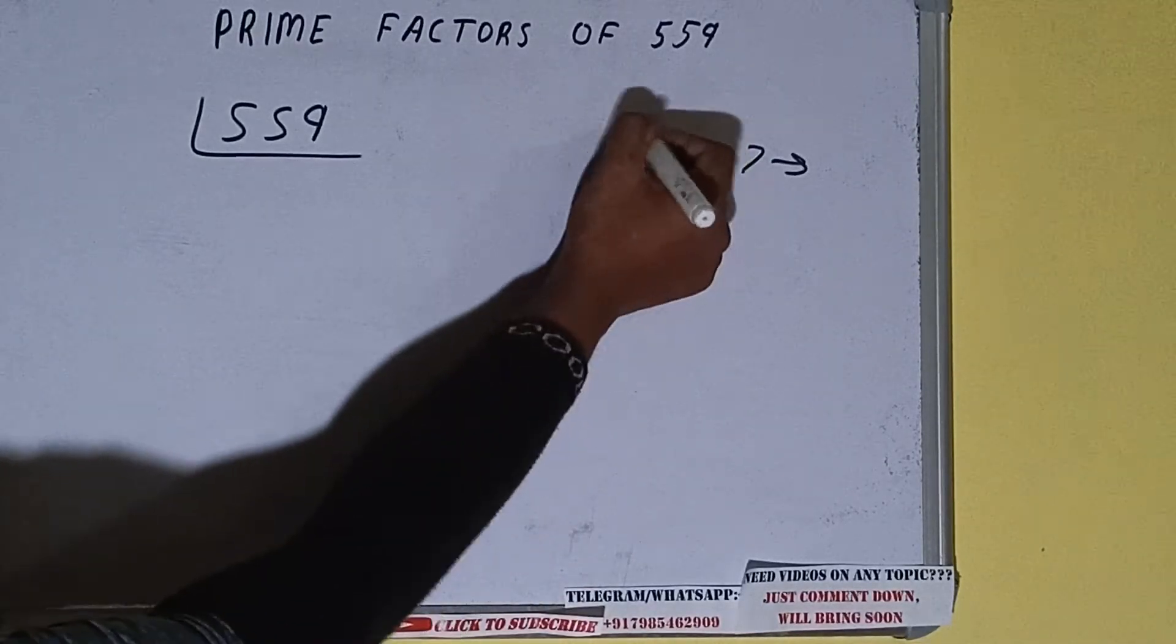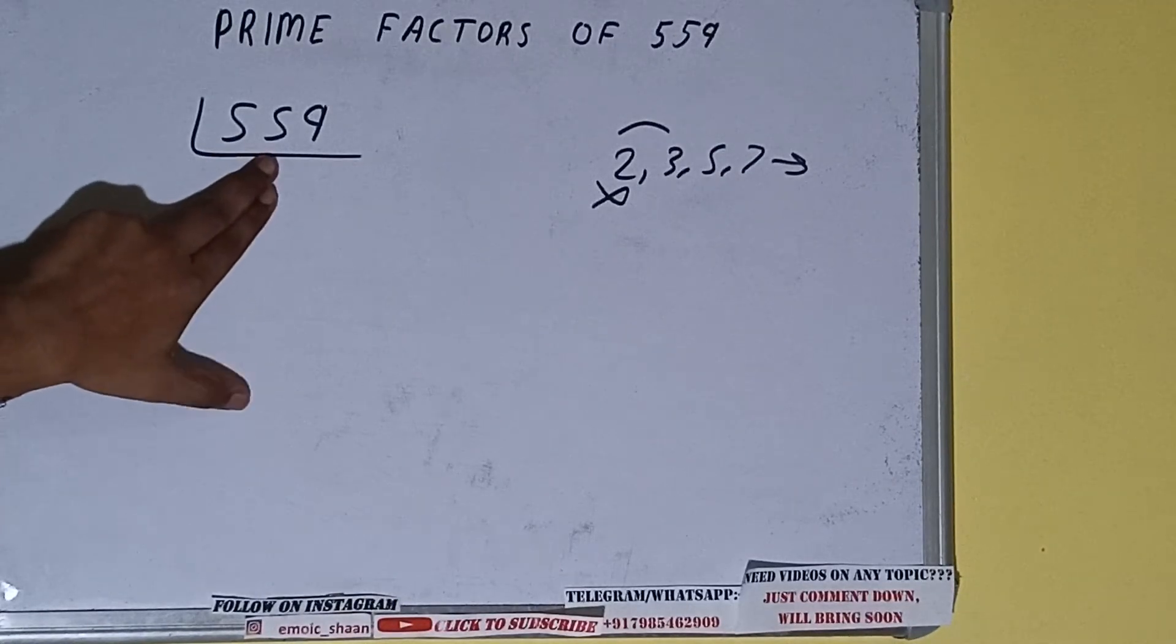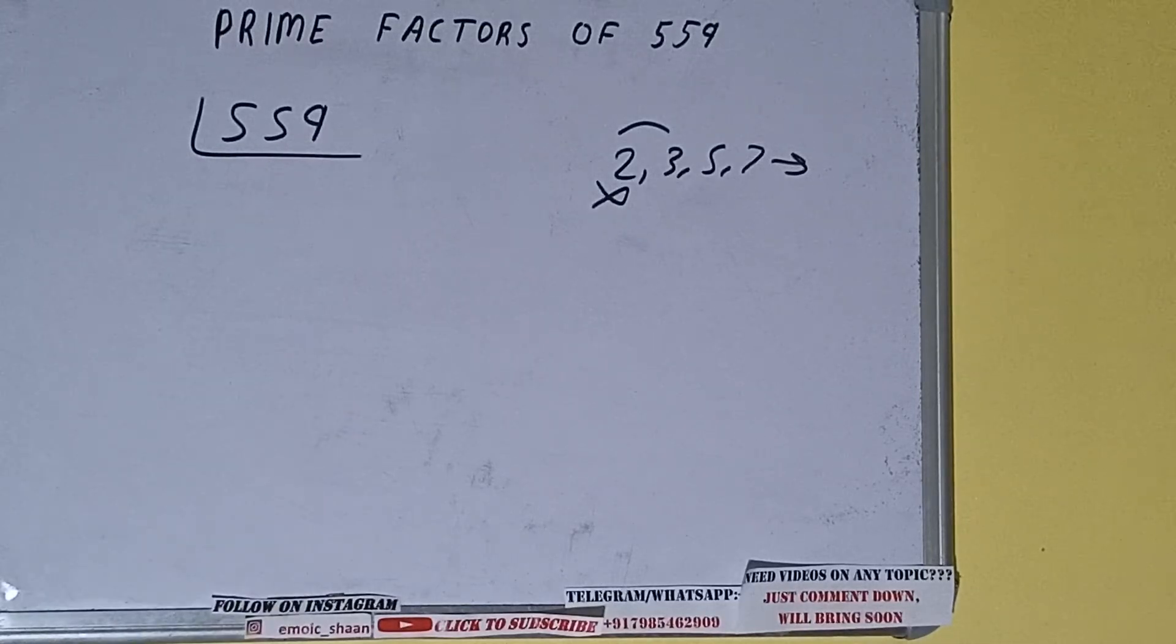So we'll be checking with the next lowest prime number, that is 3. Is it divisible by 3? Let's check. 3, 1, 3, 2, 5, 3, 8, 24, 1, 9... no, it is not divisible by 3 also.